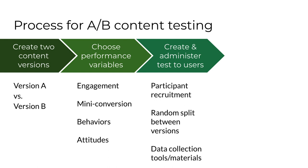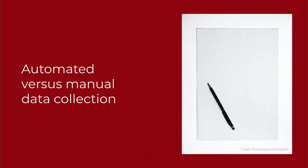Step three is creating materials and administering them to users. Recruit participants who are as much like your actual users as possible, and split them randomly between the two versions. Before administering the test, set up tools for collecting performance data. If using survey-type questions to measure user attitudes, you'll need a way to collect answers. There are many tools that automate data collection and let you download a spreadsheet with results. Google Forms is a free tool I recommend for your course project.